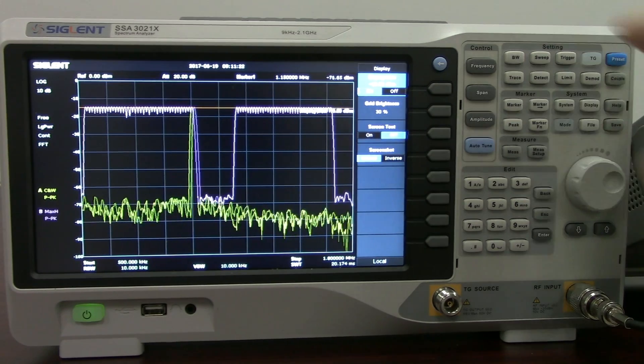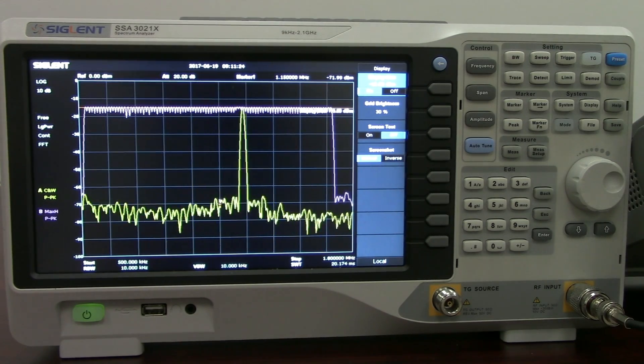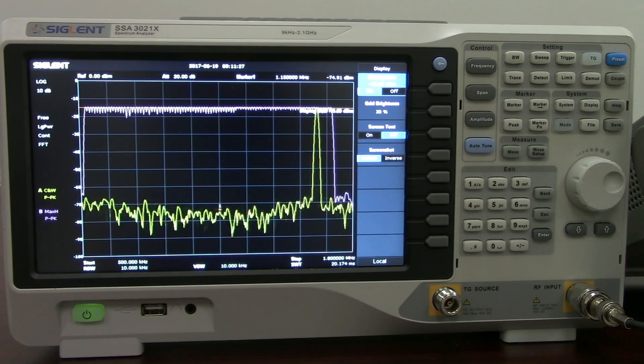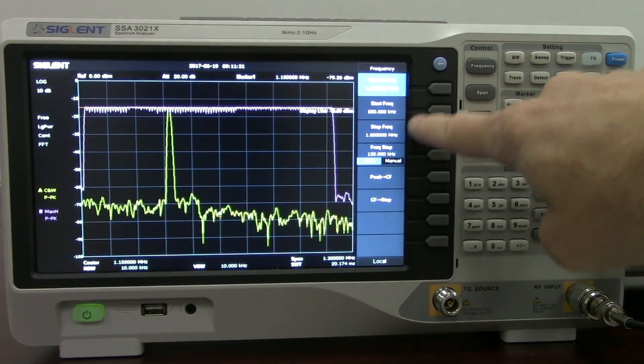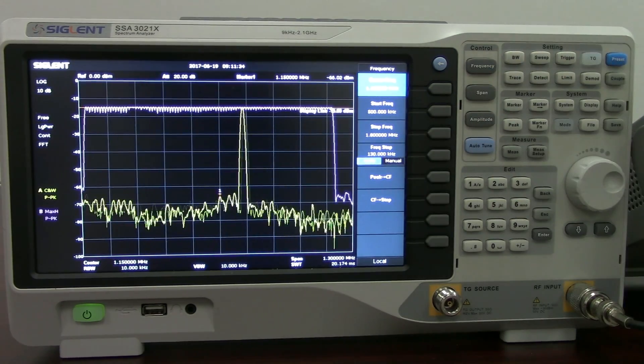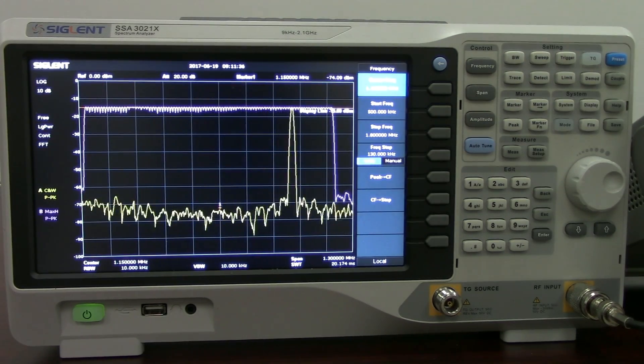Now I'm going to enable a secondary trace in pink. That is going to be a max hold, so it shows the maximum value at each frequency bin throughout all of the successive scans until we reset. And I set a display line to measure the amplitude. And you can see that it's minus 15 dBm as we had expected.